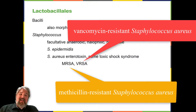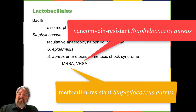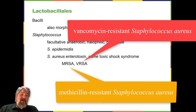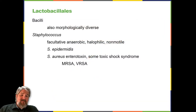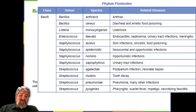MRSA and VRSA are also contagious, posing a serious threat in hospitals, nursing homes, dialysis facilities, and other places where there are large populations of elderly, bedridden, and/or immunocompromised patients. Appendix D lists the genera, species, and related diseases for Bacilli.